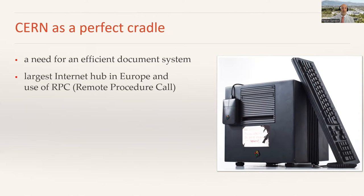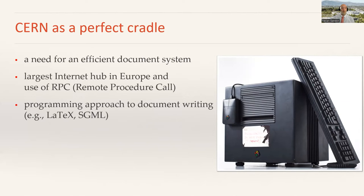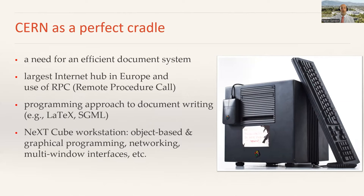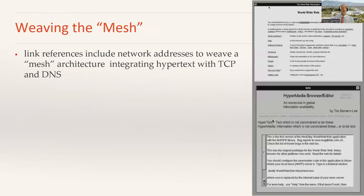CERN was also the largest internet hub in Europe at the time and was using RPC — Remote Procedure Call — that allows a program to call another program on another machine. CERN was used to programming approaches to document writing, such as LaTeX or HTML, and was using the latest equipment such as the NeXTcube workstation, which offered an object-based and graphical programming interface, networking capabilities, and multi-window interfaces. This was a perfect environment to weave that MESH — the idea being that link references would include network addresses, integrating hypertext with TCP and DNS, integrating hypertext with the internet.